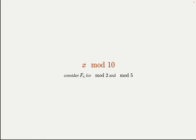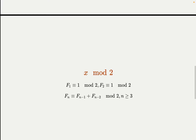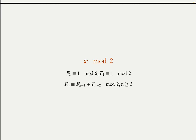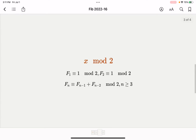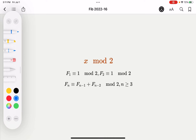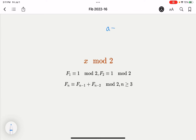One fundamental property of the modulus is that when you add two numbers, the sum's modulus equals the sum of the individual numbers' moduli. In other words, if a plus b equals c, then (a mod n) + (b mod n) gives the same result. This gives us a recurrence with mod 2.